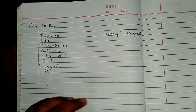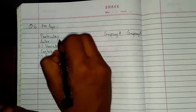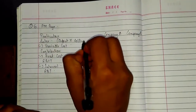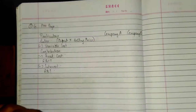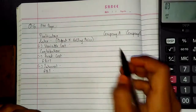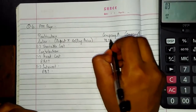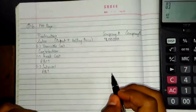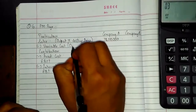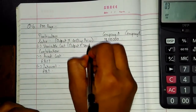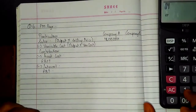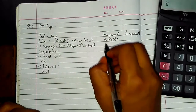Sales is calculated as output multiplied by selling price. Output of Company A is 60,000 and selling price is Rs. 30, so sales comes to Rs. 18 lakhs. Variable cost per unit is Rs. 10, so variable cost equals 60,000 into 10, which is equal to Rs. 6 lakhs.